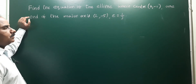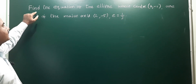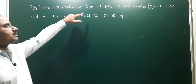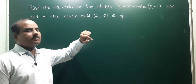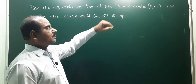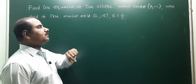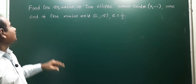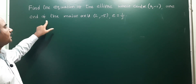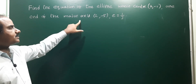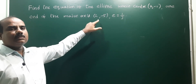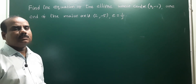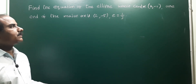The given problem is: find the equation of the ellipse where center is (2, -1), one end of the major axis is (2, -5), and eccentricity is 1/3.